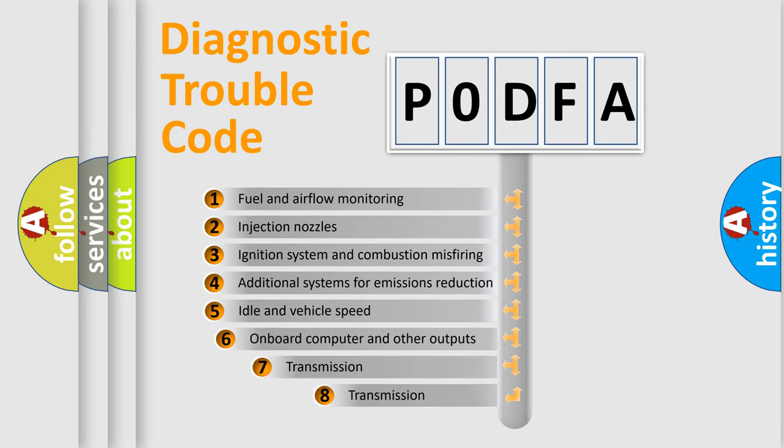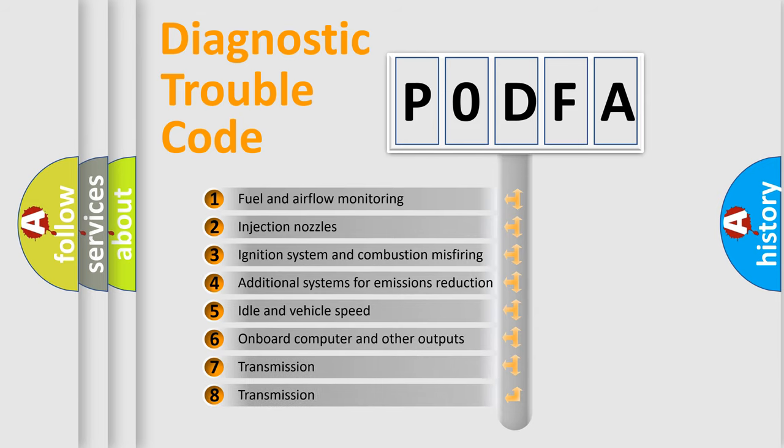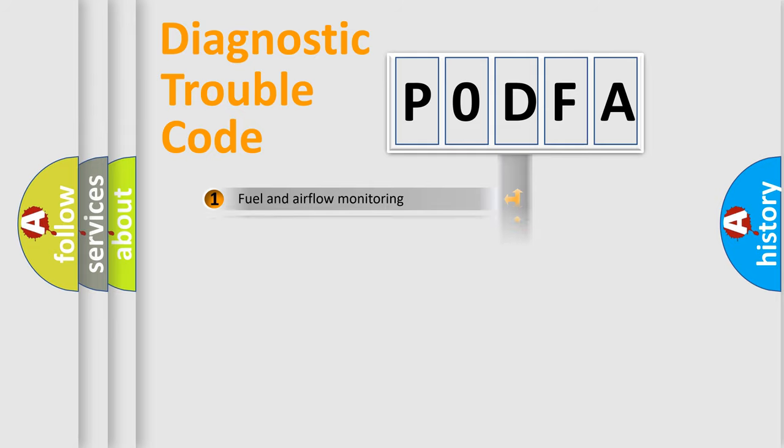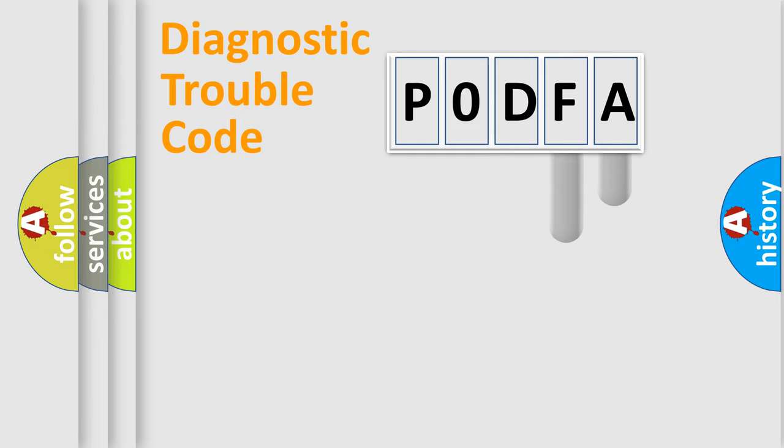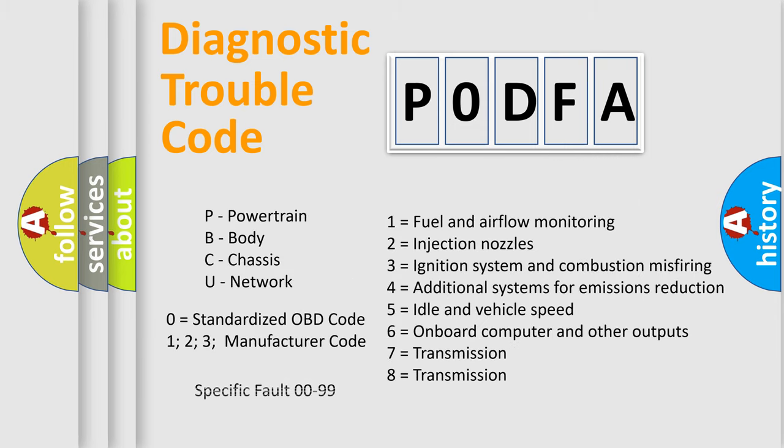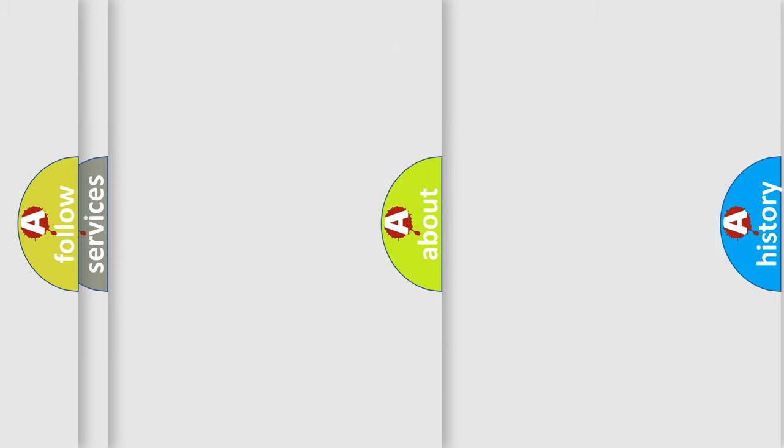The third character specifies a subset of errors. The distribution shown is valid only for the standardized DTC code. Only the last two characters define the specific fault of the group. Let's not forget that such a division is valid only if the second character code is expressed by the number zero.